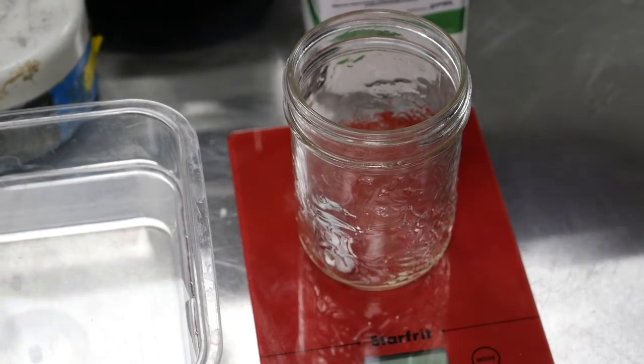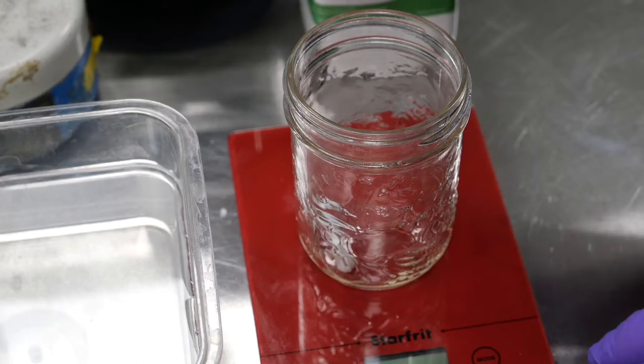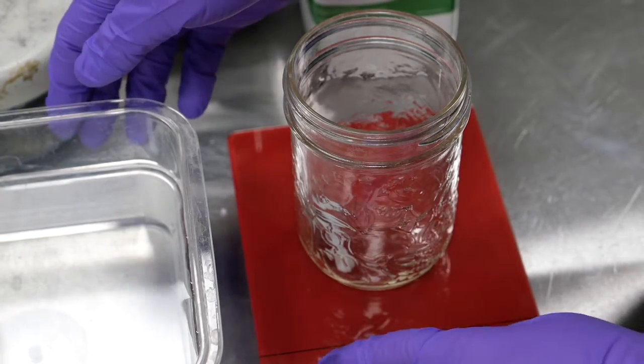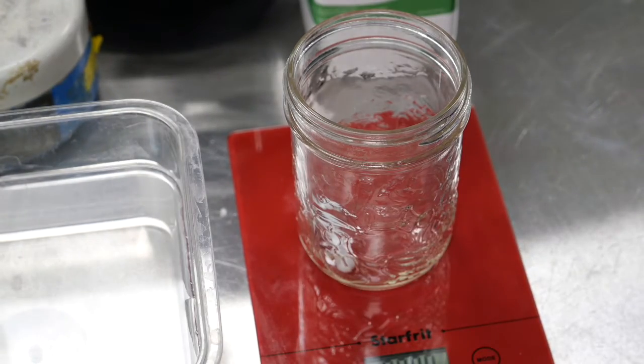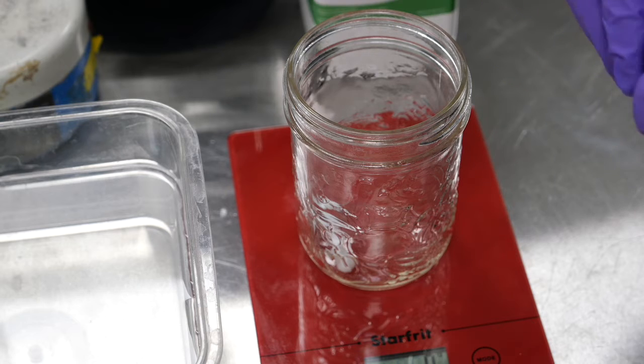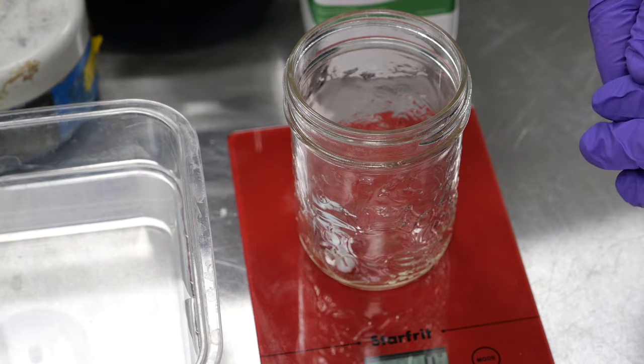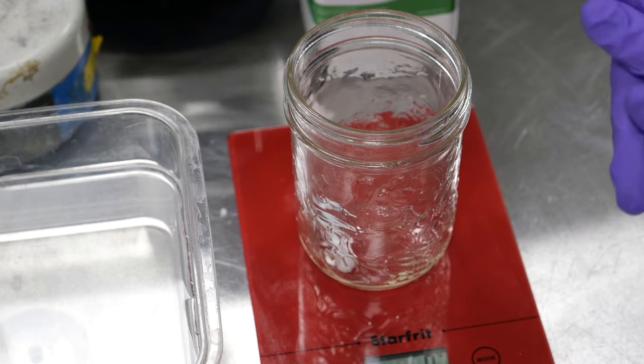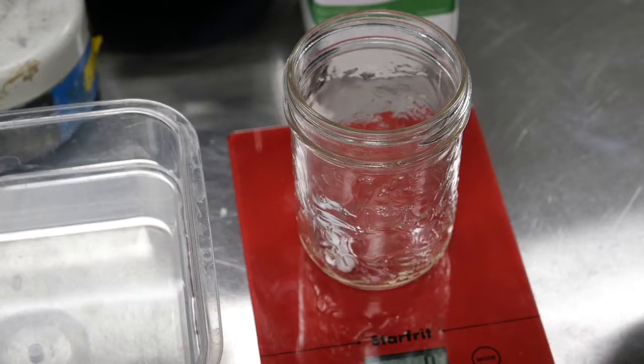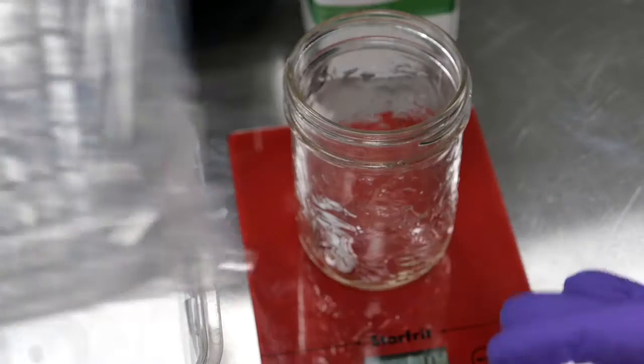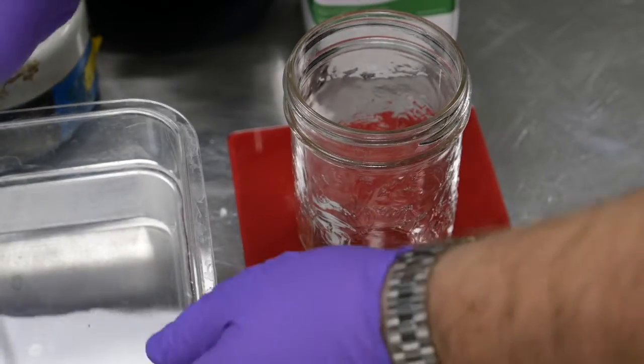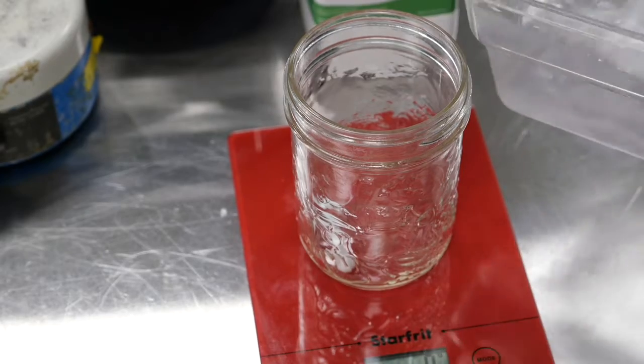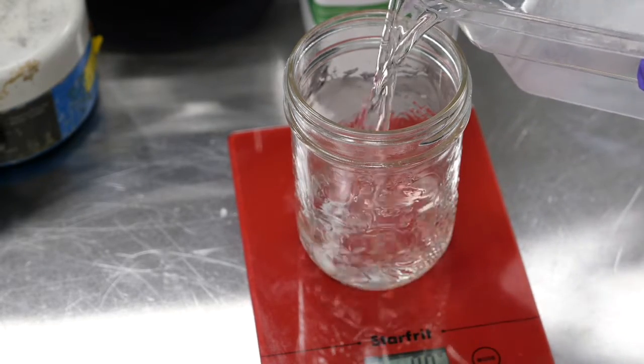We're going to weigh our ingredients, starting with our water. I'm going to do just a quarter batch. A normal batch would be one liter, that'll make about two stacks of plates. I'm going to make about 250 milliliters, that'll give me about half a stack of plates, just enough for what I need this week. So I'm going to weigh out 250 grams of water. It's okay if we're off by a few grams.